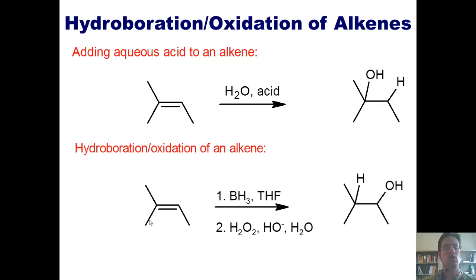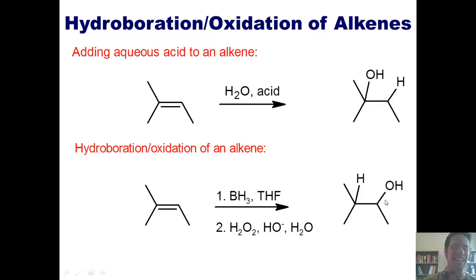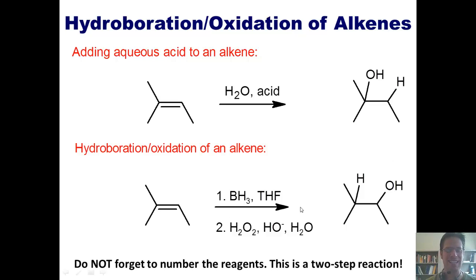By a mechanism I do not require you to know, you can take a simple alkene, treat it under these two steps, and place the OH in the anti-Markovnikov position. Hydroboration oxidation is a two-step reaction, so you should not forget to number the reagents. Step one is borane and THF, and step two is peroxide, hydroxide, and water.